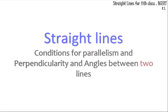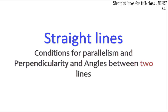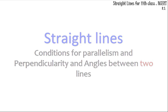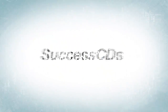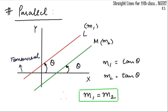Hi guys, so let's continue with straight lines again today, moving on to the second part of the first portion. We have already done the slope of a line and the two methods to define a slope, so we'll move ahead and start with the conditions for parallelism and perpendicularity of two lines in terms of slope.